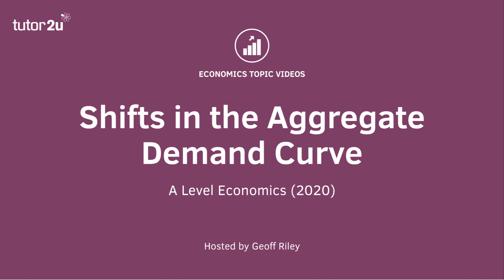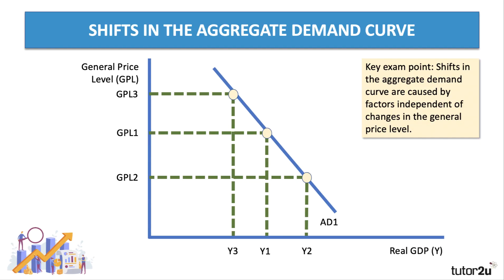In this third video in this playlist, we're going to explore some of the factors that can cause a shift in the position of the aggregate demand curve. A really key exam point is that changes or shifts in the AD curve will be caused by factors independent of changes in the general price level. Changes in the price level cause a movement along the demand curve, not a shift.